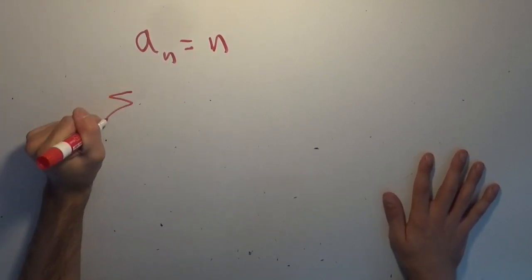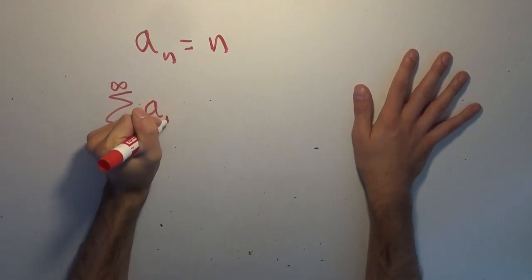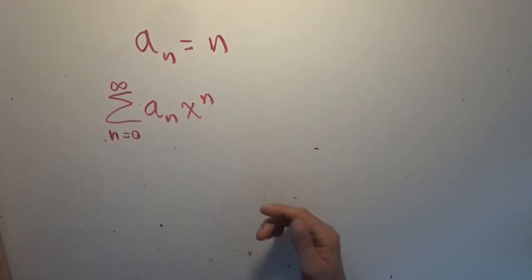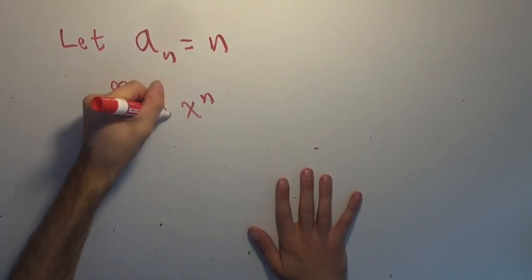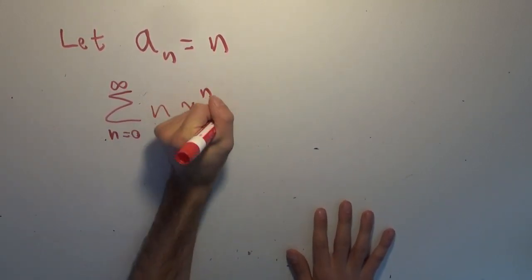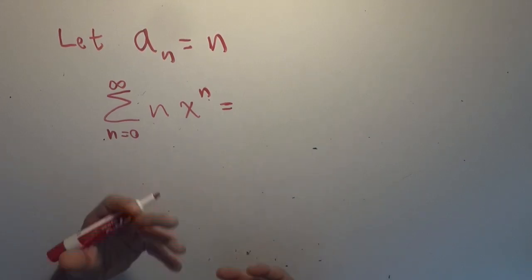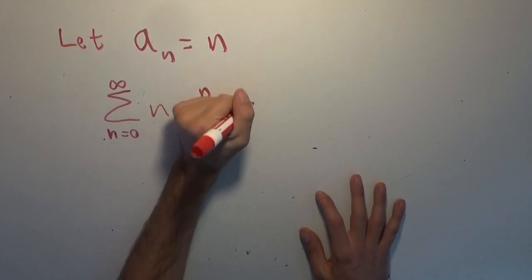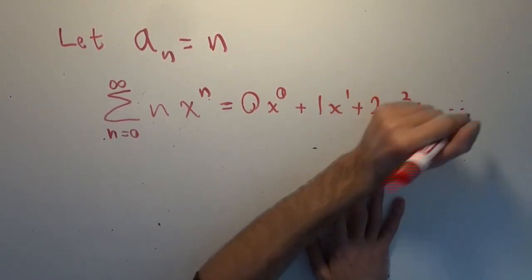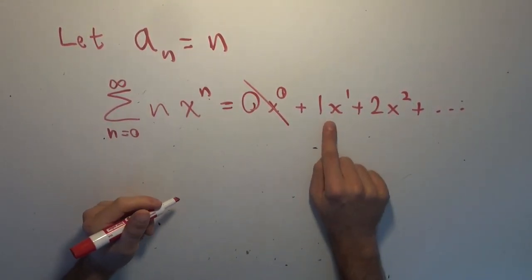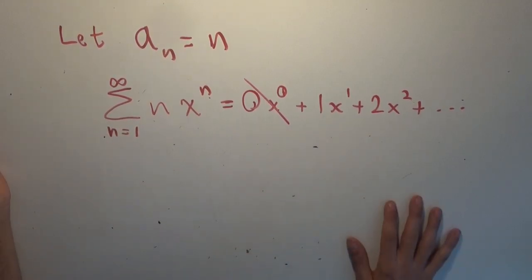We're essentially building a series that looks like this: the sum from n equals zero to infinity of a sub n times x to the nth power. Since a sub n equals n, the first term is zero times x to the zero, then one times x to the first, plus two times x squared, plus dot dot dot. The first term is zero, so this is equal to the same sequence starting at one.